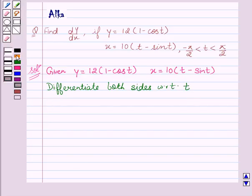We get dy upon dt equal to 12 sin t and dx upon dt equal to 10 into 1 minus cos t. Now, by chain rule,